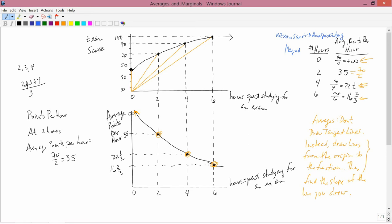So between zero and two, the change in exam score is the difference between 70 and 50, and the difference in hours spent studying is the difference between two and zero. So you get 20 over 2, which is the marginal payoff of 10. Between two and four hours, the change in exam score is 90 minus 70. The change in hours spent studying is 4 minus 2, and so you have 20 over 2, which is also 10.